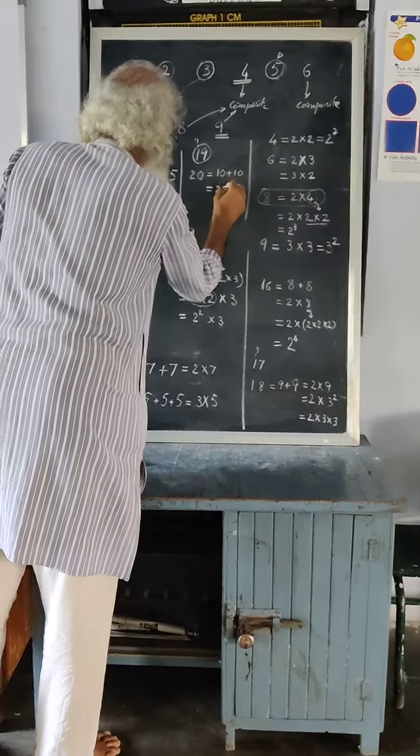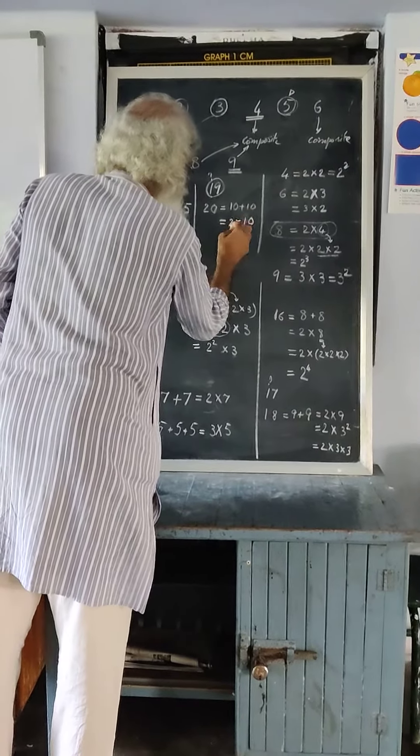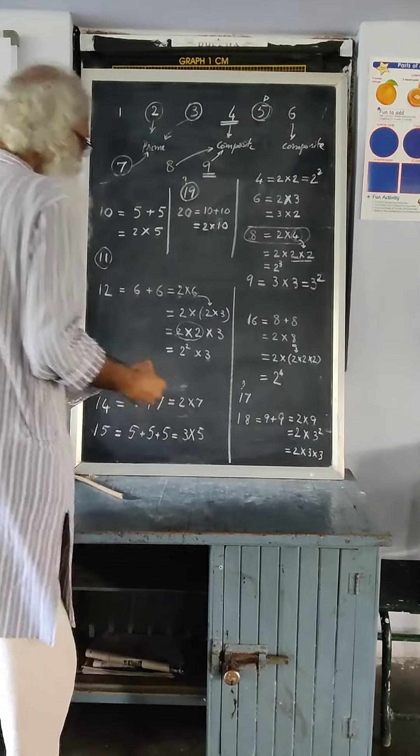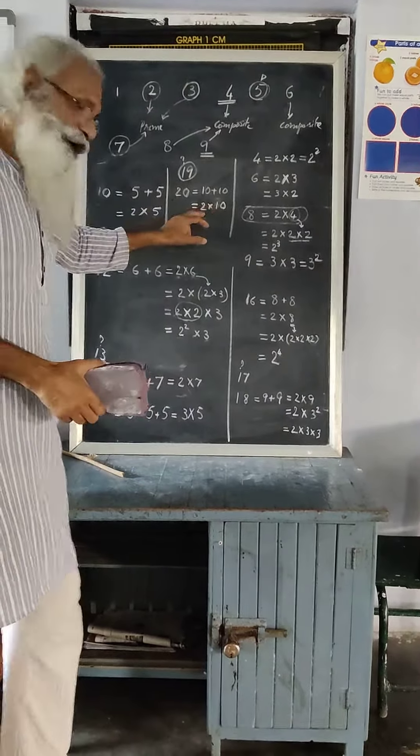20 can be written as 10 plus 10. So another symbol for 10 plus 10 is 2 times 10. Now, is this prime factorization?